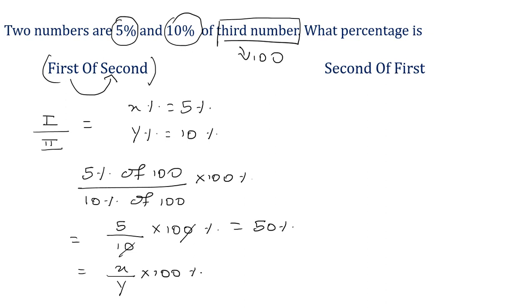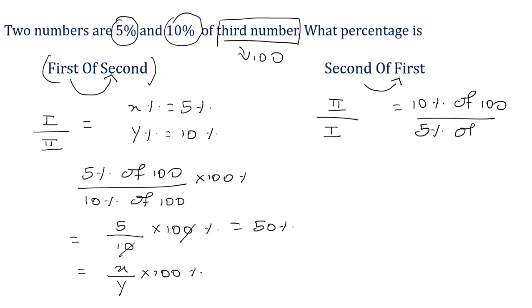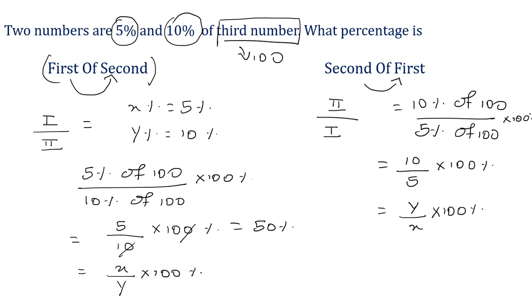In the same way, what percentage is the second of the first? Here the second is compared with the first, so in the numerator put the second number and in the denominator put the first: 10 percent of 100 upon 5 percent of 100, into 100 percent. This gives 10 upon 5 into 100, which is the formula y upon x into 100 percent. Solving: 10 upon 5 into 100 gives 200 percent. So 200 percent is the second of the first.